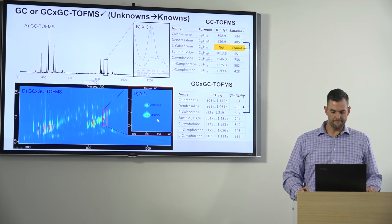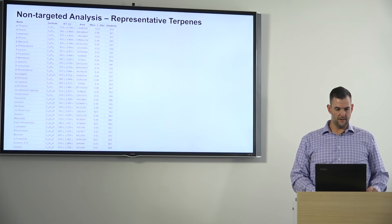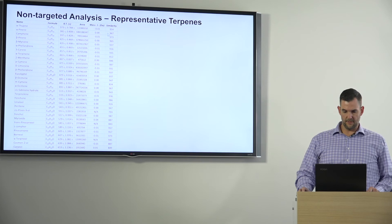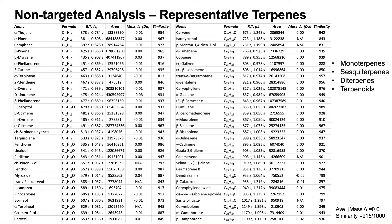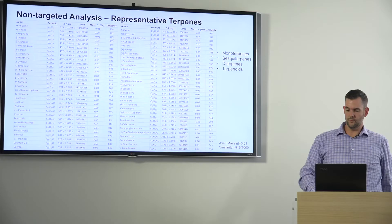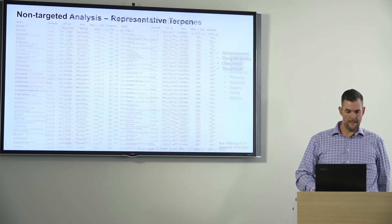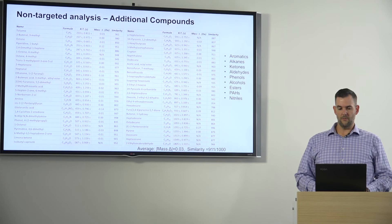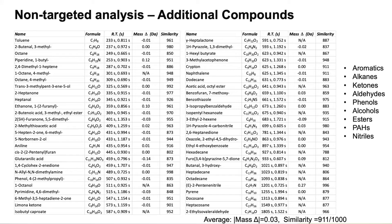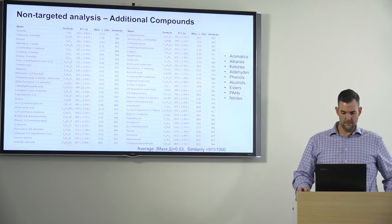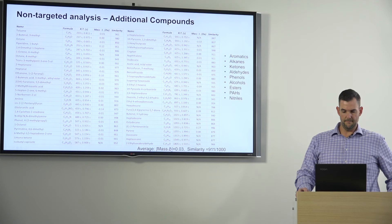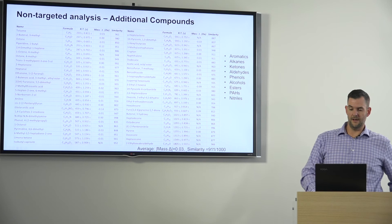Looking at some representative terpenes that were found — and I won't go through the entire list, but the important thing to note is that they had excellent similarity scores and mass delta values. Across monoterpenes, sesquiterpenes, diterpenes, and terpenoids, the average mass delta was 0.01 with an average similarity score of 916 out of 1000. We also looked at additional compound classes including aromatics, alkanes, ketones, aldehydes, phenols, esters, PAHs, and nitriles, with average mass delta values of 0.03 and similarity scores of 911 out of 1000.